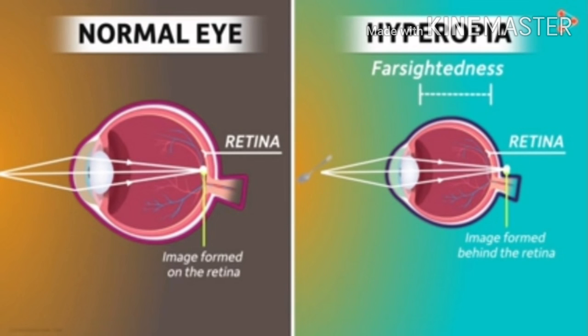See the second one. The normal eye is shown alongside hyperopia, otherwise known as hypermetropia — farsightedness. Here the nearby object cannot be focused on the retina; it is focusing beyond the retina, so the image will be blurred. In this defect, the person cannot see the nearby object clearly, but they can see distant objects clearly.